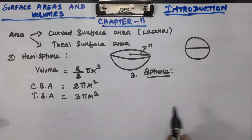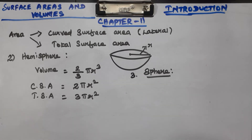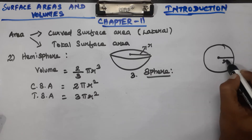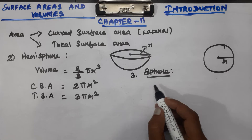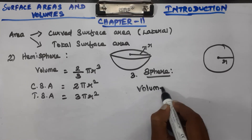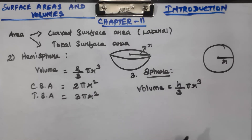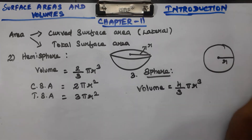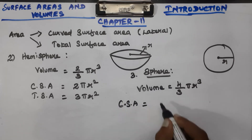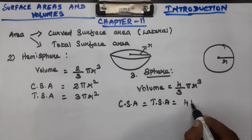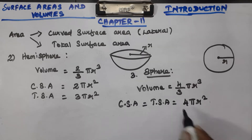Now for the sphere — a sphere is like a circle in 3D with a center and radius r. The volume of a sphere is 4/3 π r³. Since every point on a sphere is equidistant from the center, there is no distinction between curved and total surface area. The curved surface area and total surface area of a sphere are both 4 π r².